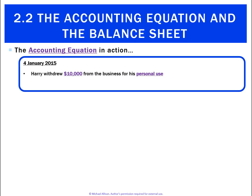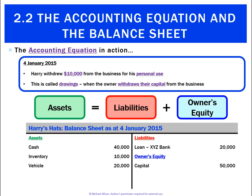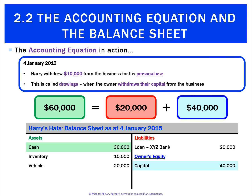On the 4th, Harry withdraws $10,000 from the business for his personal use. That's called drawings, where the owner withdraws their capital from the business. The first effect is we've now got less money — cash goes from $40,000 to $30,000. The other effect is the capital figure of $50,000 goes down to $40,000. Our accounting equation is now assets of $60,000, liabilities of $20,000, and owner's equity of $40,000 — the balance sheet is in alignment.